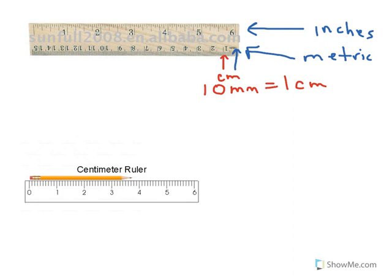Below we have a ruler that is labeled in centimeters and you can tell because there are 10 divisions for each number. And we have a pencil here.